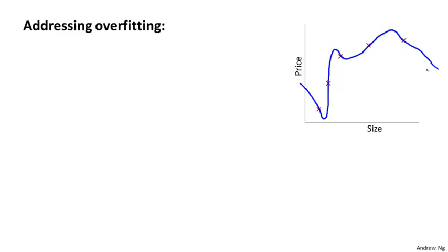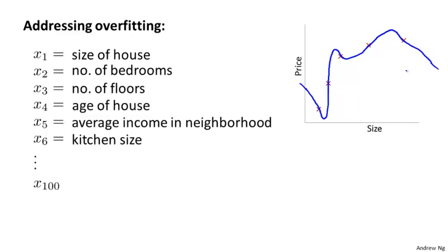So plotting the hypothesis could be one way to try to decide what degree polynomial to use, but that doesn't always work. And in fact more often we may have learning problems where we just have a lot of features, and there is not just a matter of selecting what degree polynomial. And in fact when we have so many features, it also becomes much harder to plot the data and becomes much harder to visualize it to decide what features to keep or not.